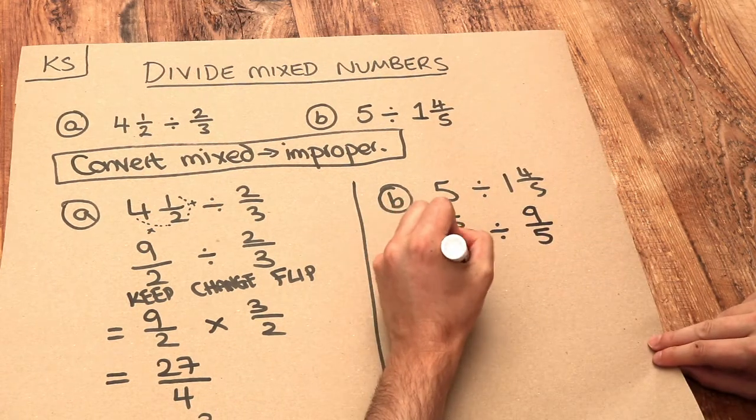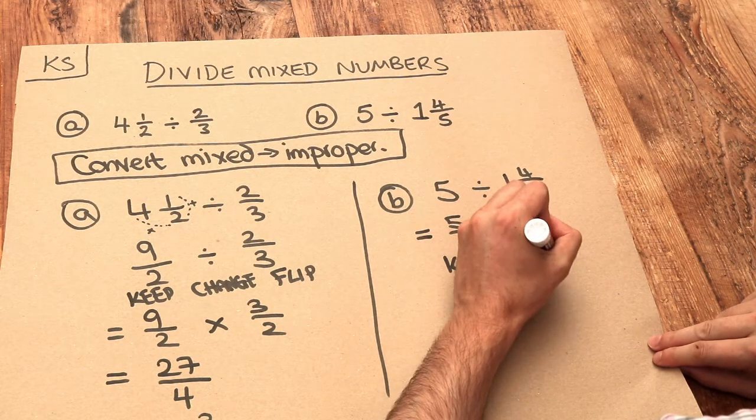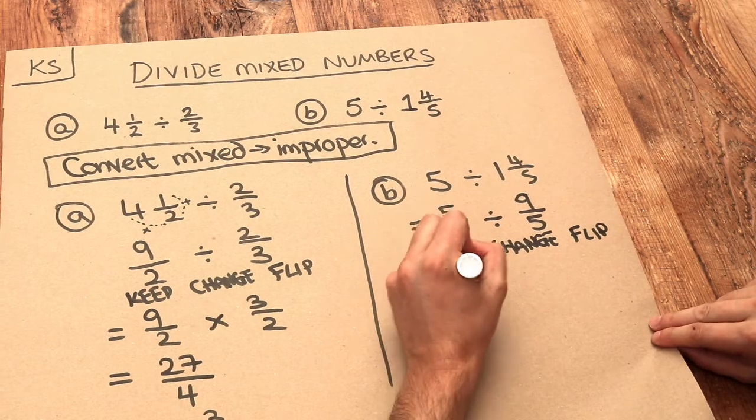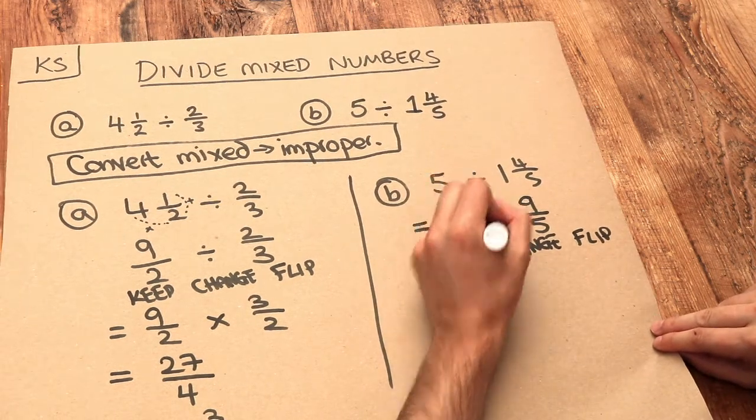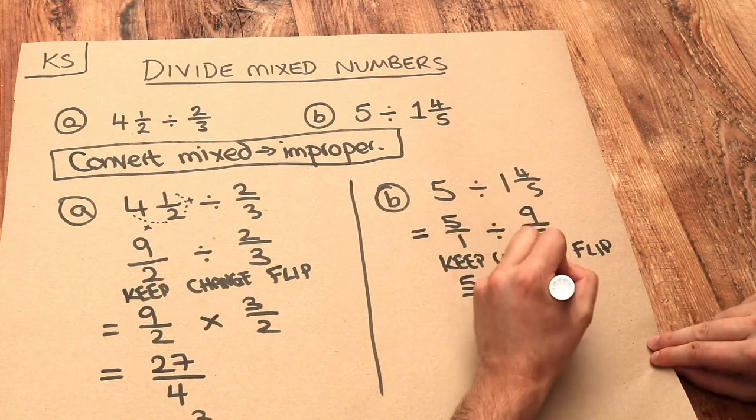And then we can use our keep-change-flip method to divide these fractions. So we keep the 5 over 1 as it is, change this operator from divide to times, and flip the second fraction to become 5 ninths.